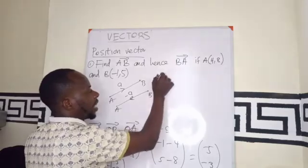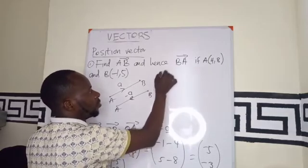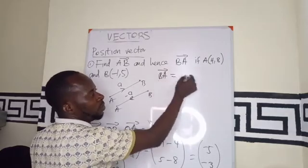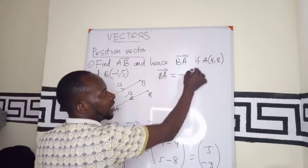So, therefore, vector BA is going to be negative of vector AB.